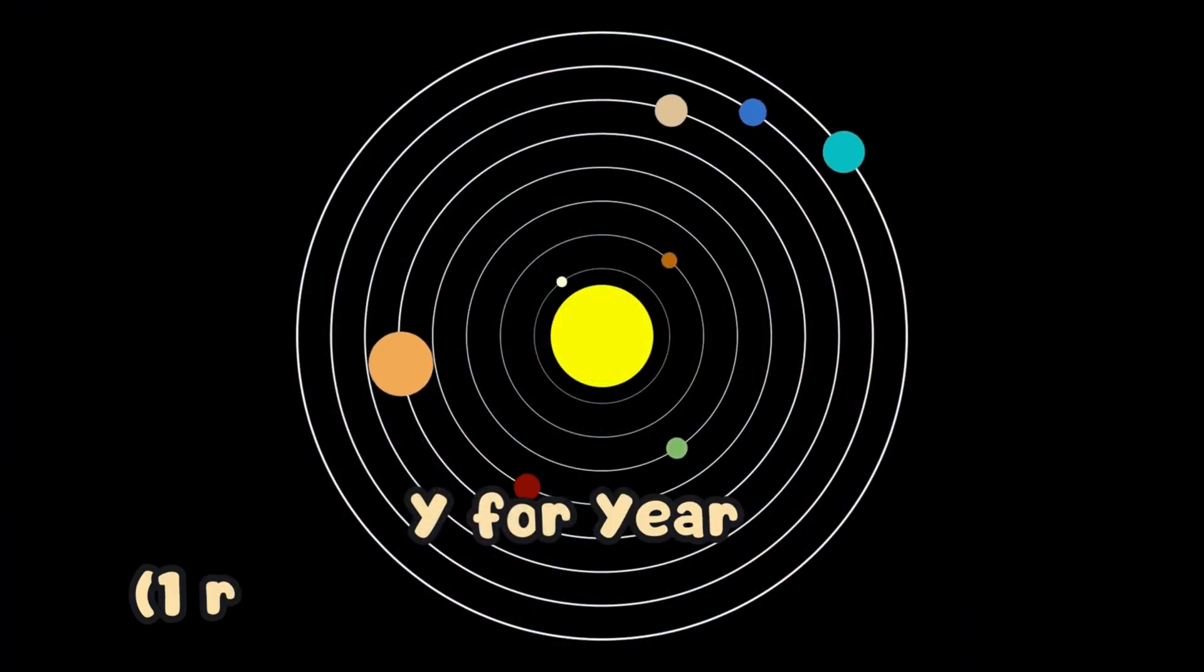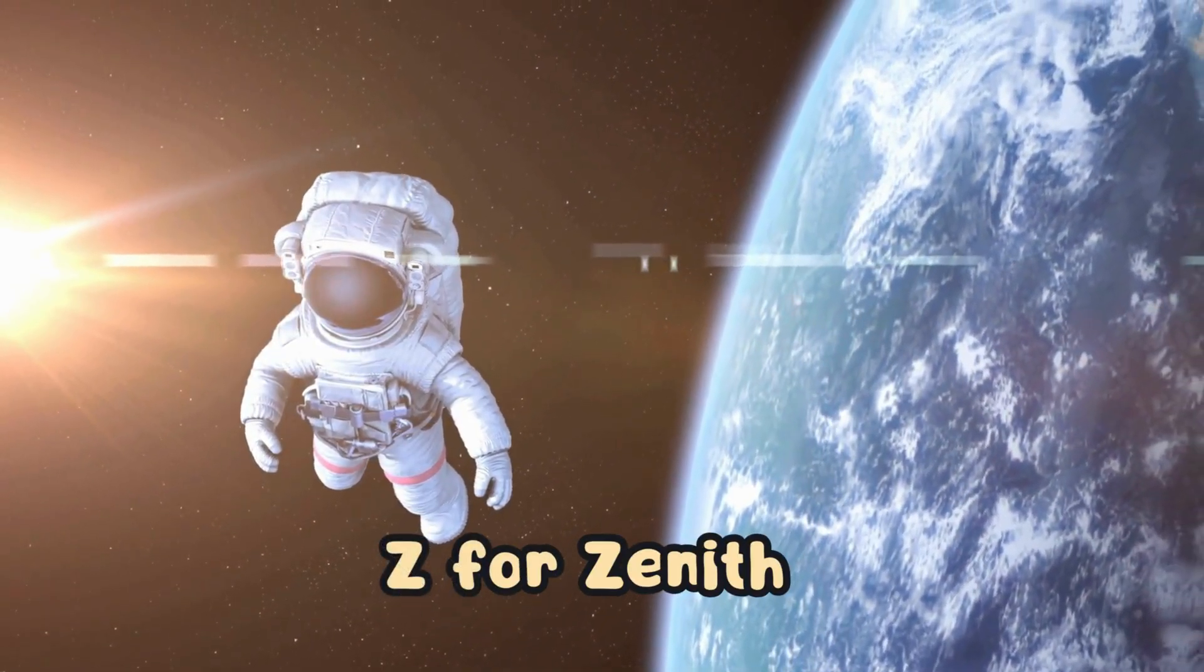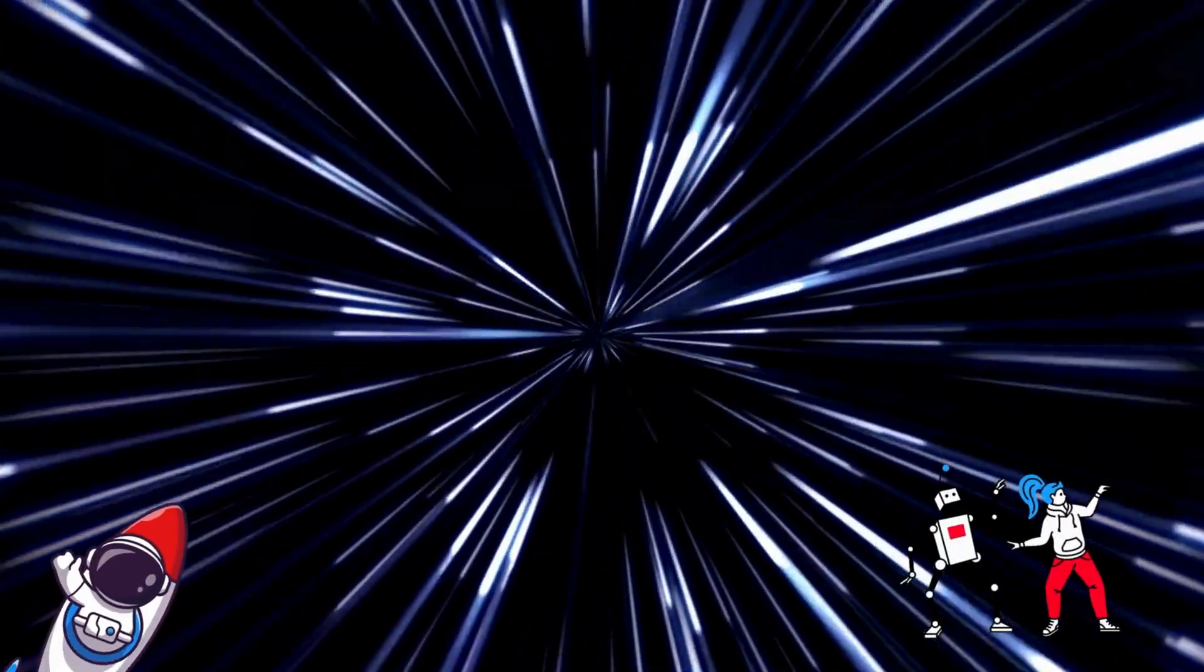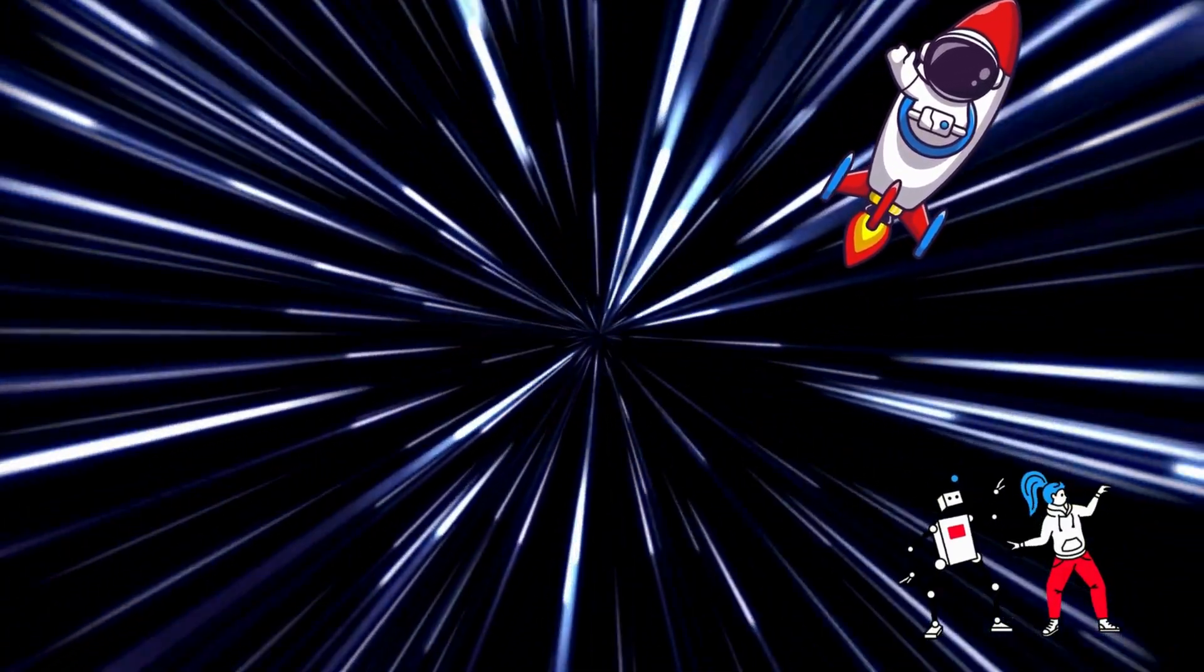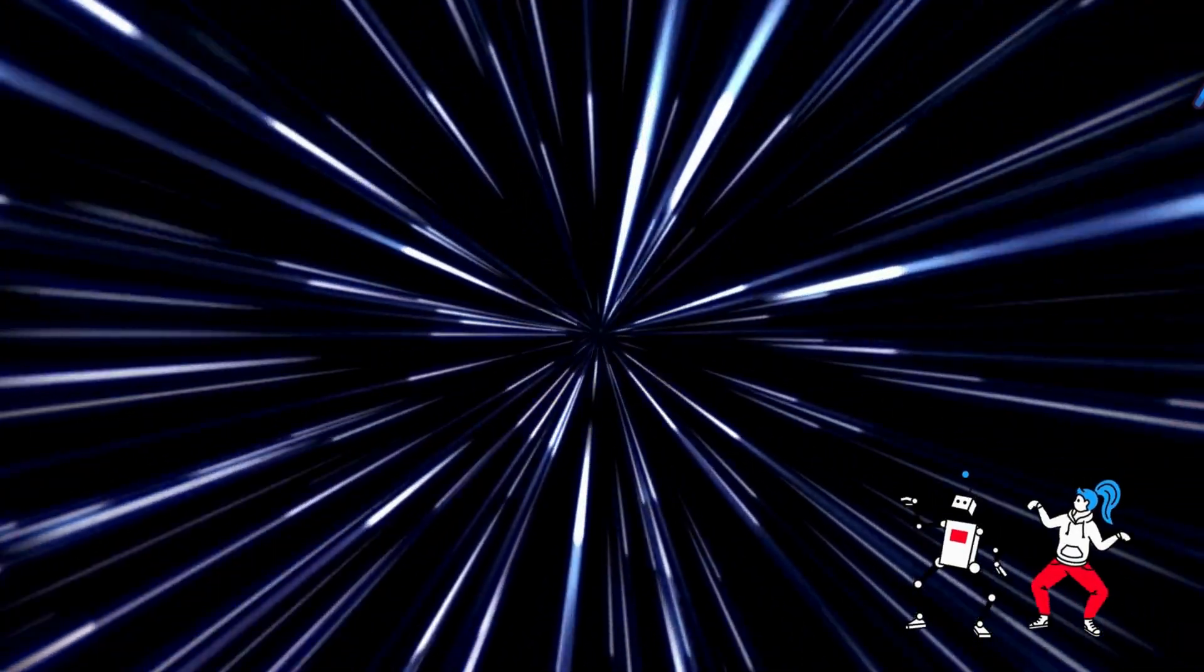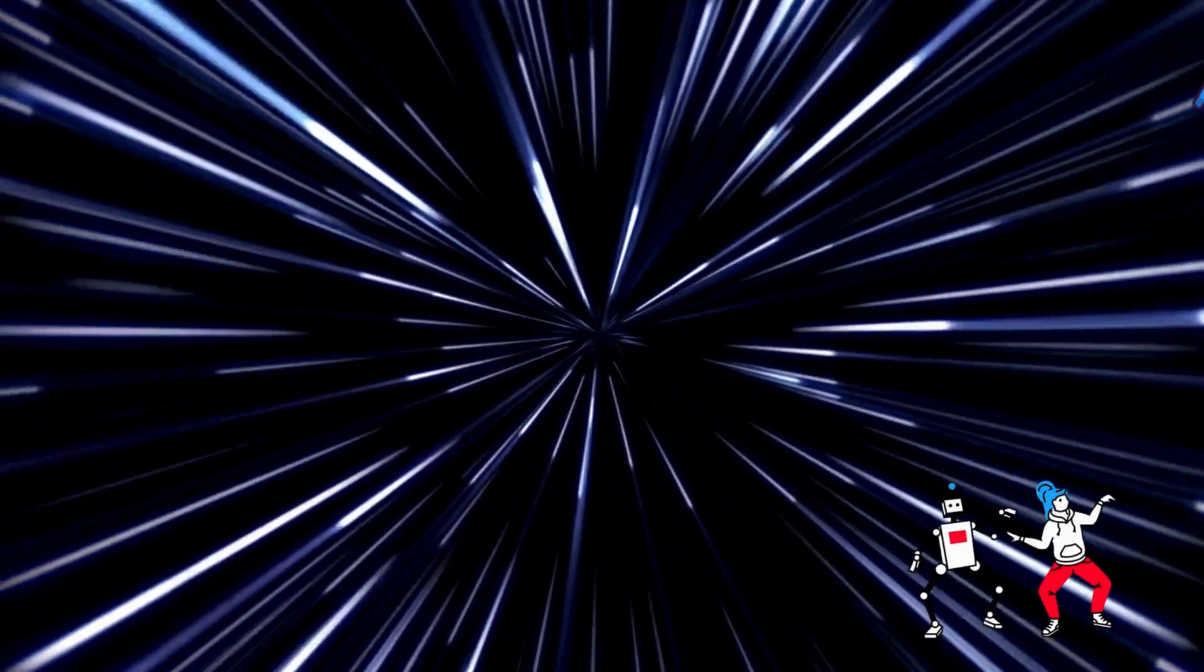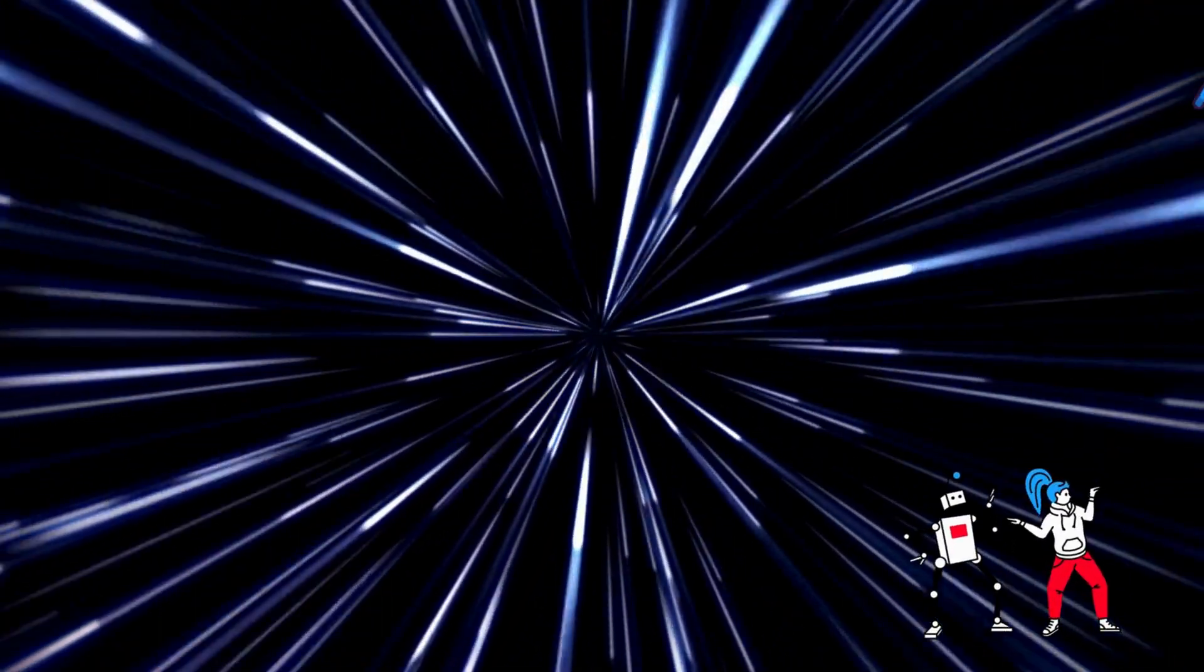Y for year, we circle the sun. Z for zenith, where the stars run. Come on kids, let's sing and play, learning the stars in a fun new way. From A to Z we travel far, exploring space and wishing on stars.